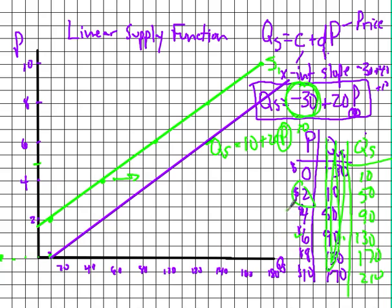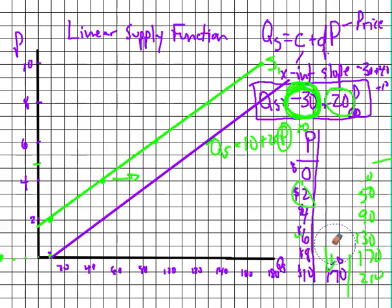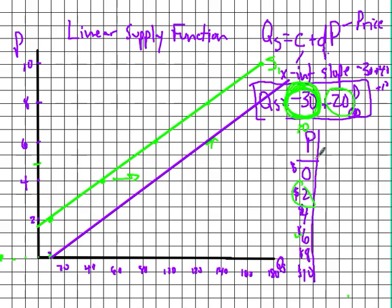What causes this curve to shift right or left? A change in one of the determinants of supply. When a supply determinant changes, it impacts the x-intercept value and shifts the curve one way or another. Now let's look at what happens when the slope changes.